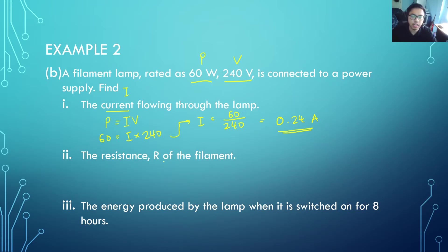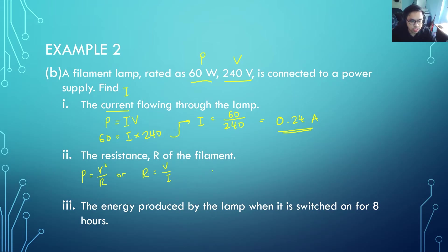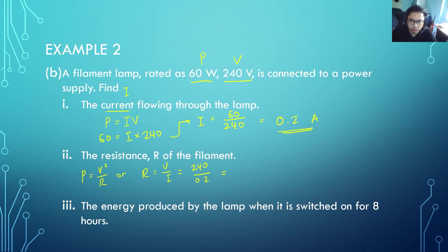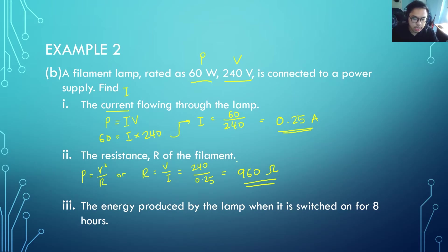Example 3b: Find the resistance of the filament. We can use P equals V²/R or R equals V over I from Ohm's law. Using R equals V over I, with V equal to 240 and I equal to 0.25, we get 240 divided by 0.25, which equals 960 ohms.